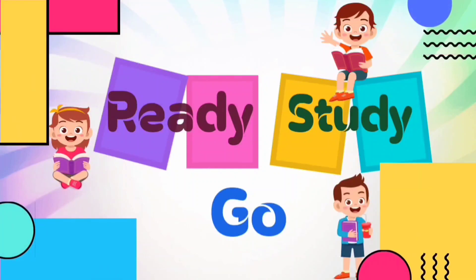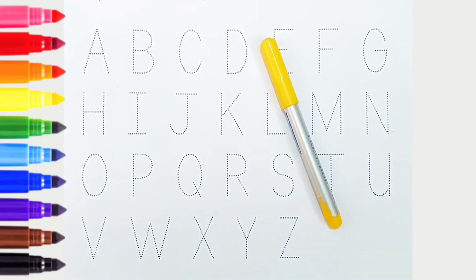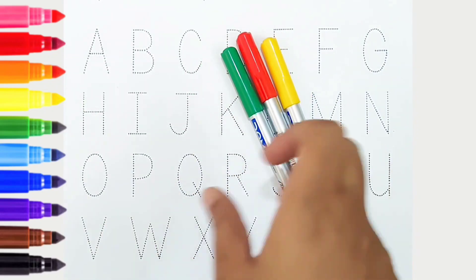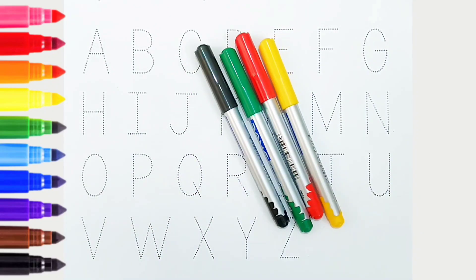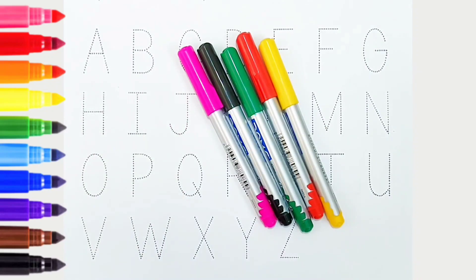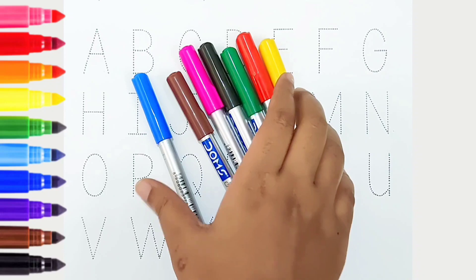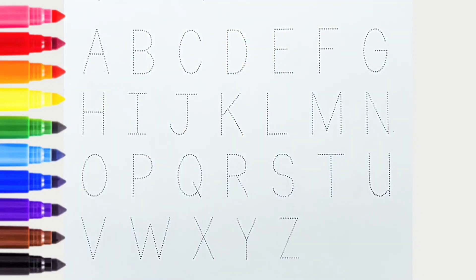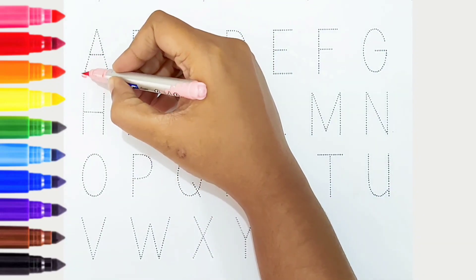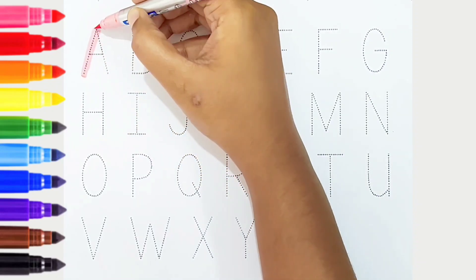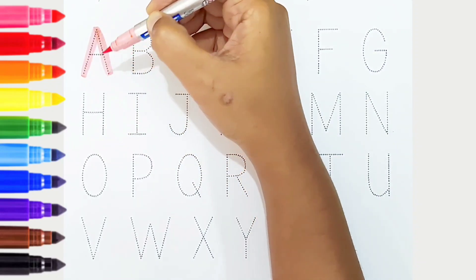Ready, study, go! Yellow color, red color, green color, black color, pink color, brown color, blue color. Hi kids, today we can learn the alphabets from A to Z. Let's begin. A, light pink color, is for apple.